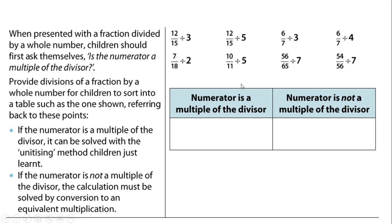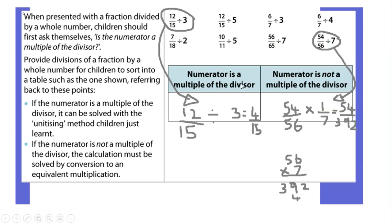Okay I'm now going to show you one calculation in each of these boxes just so you understand what I mean. So I chose to put 12/15 divided by 3 here and I put my answer as well. So I did 12 divided by 3 is 4, so 4/15. I chose to put this one, 54 over 56 divided by 7 in this box because 54 isn't a multiple of 7.